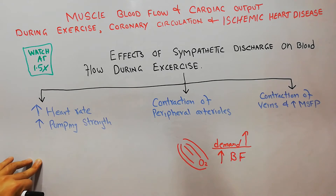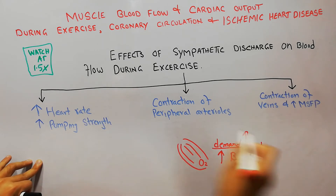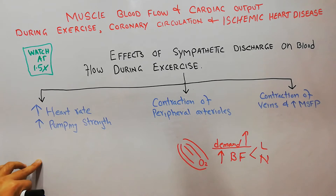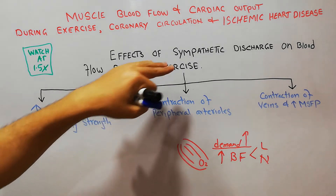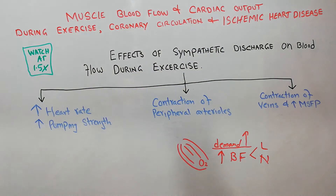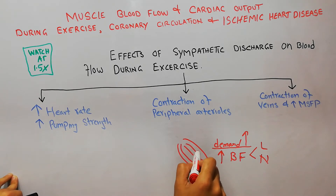In our last lectures we discussed that there are two main mechanisms: one is the local mechanism and the other is the nervous system. Today we are going to discuss in detail the sympathetic discharge, which is a nervous mechanism to help increase the supply of oxygen and other nutrients to the exercising muscle.